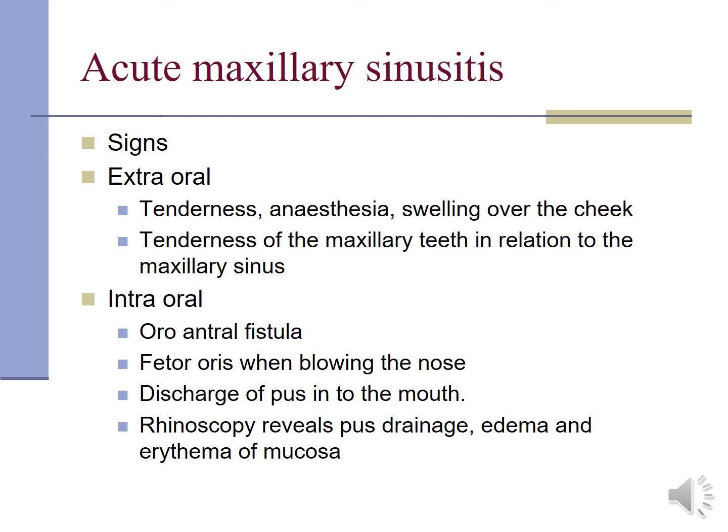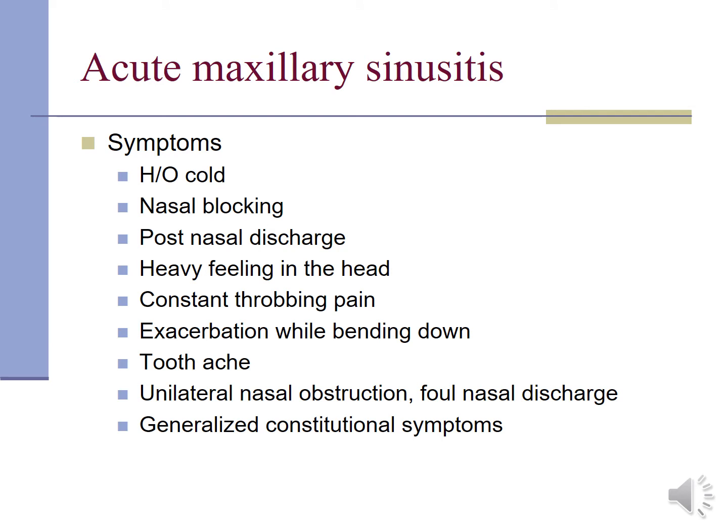In acute maxillary sinusitis, the extraoral signs are tenderness, anesthesia, and swelling over the cheek, along with tenderness of the maxillary teeth. Intraorally, if there is an oral fistula, there can be discharge of pus into the mouth. Rhinoscopy will reveal pus drainage, edema, and erythema of the mucosa. Symptoms include history of cold, nasal blocking, post-nasal discharge, heavy feeling in the head, constant throbbing pain, exacerbation when bending down, toothache, unilateral obstruction, foul nasal discharge, and generalized constitutional symptoms.